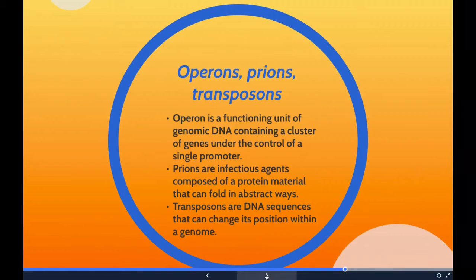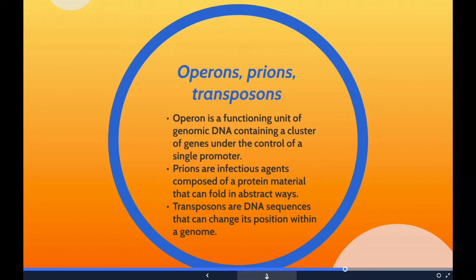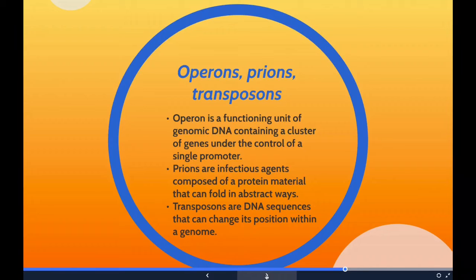In genetics, an operon is a functioning unit of genomic DNA containing a cluster of genes under the control of a single promoter. The genes are transcribed together into a messenger RNA strand and either translated together in the cytoplasm or undergo splicing to create monocistronic messenger RNAs that are translated separately, each encoding a single gene product. The result is that genes contained in the operon are either expressed together or not at all.